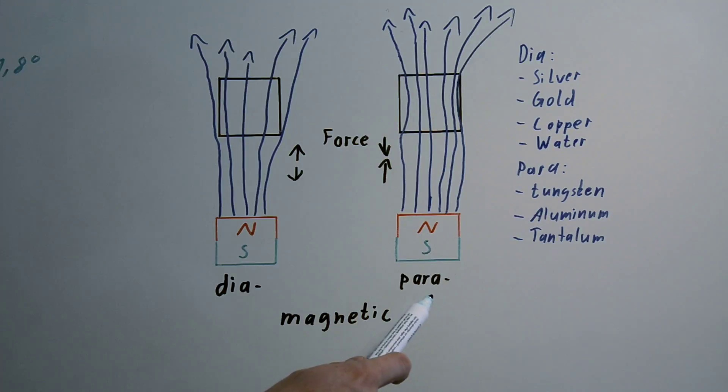The difference between diamagnetic and paramagnetic substances is the interaction with a magnetic field. You see a diamagnetic substance repels the magnetic field, so the field is reduced in the substance.